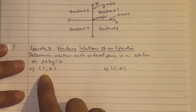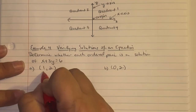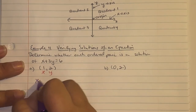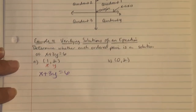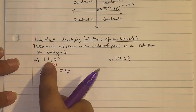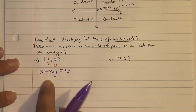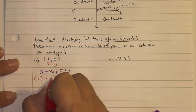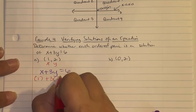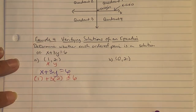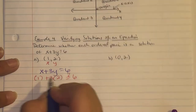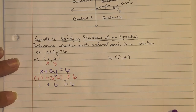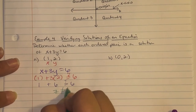First, identify your x and y values, then write down the equation: x plus 3y equals 6. Substitute x equals 1 and y equals 2: one plus three times two equals six. We get one plus six, which is seven. Seven does not equal six, so (1, 2) is not a solution.